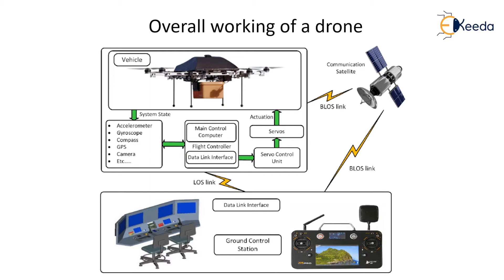The details of the flight controller will be covered later in the course. The GPS attached on the drone connects to various satellites and helps determine the precise position of the drone, which is especially important for outdoor navigation and stability. Many autonomous navigation systems rely on GPS coordinates for positioning and navigation. The slide also shows the communication link between the drone and the ground control system, through which the pilot controls the drone.